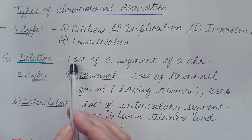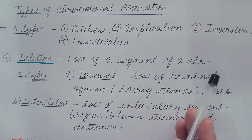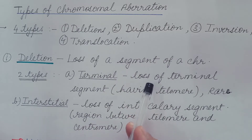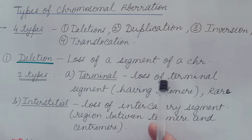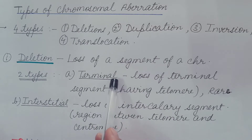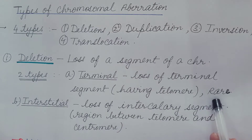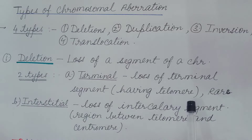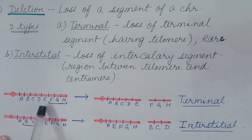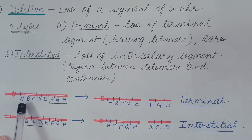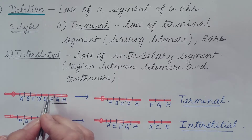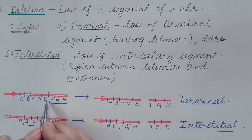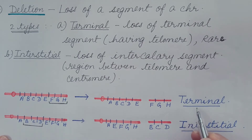First is deletion — the loss of a segment of a chromosome. Depending upon the region where the lost segment is located, it is of two types. Terminal deletion is when the terminal segment of the chromosome is lost. These are rare because the chromosome in which the telomeric end is lost becomes unstable. For example, a normal chromosome has genes A, B, C, D, E, F, G, H. If breakage occurs at one region and the terminal segment is lost, this is terminal deletion.